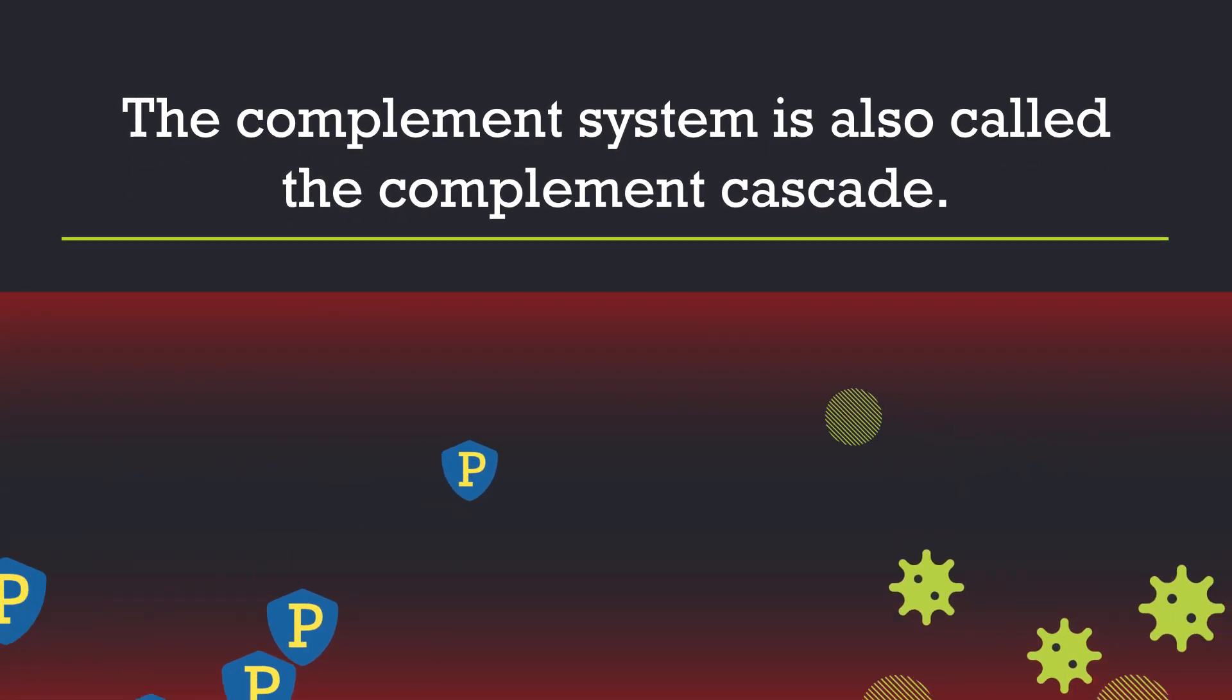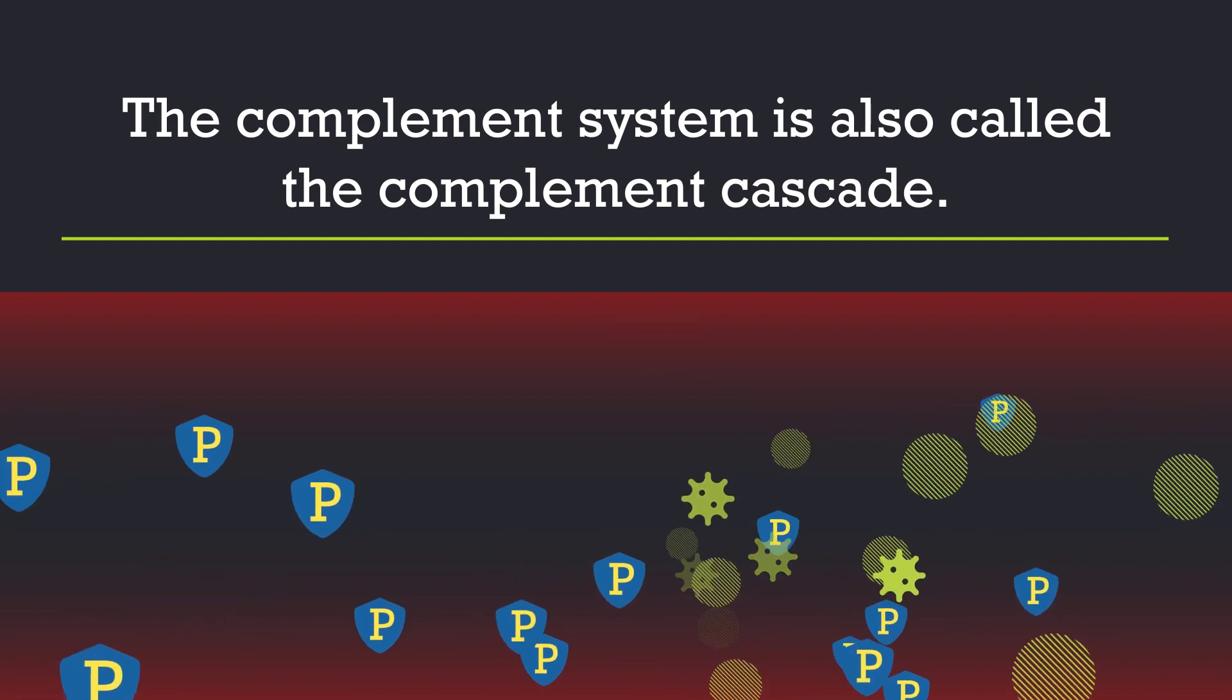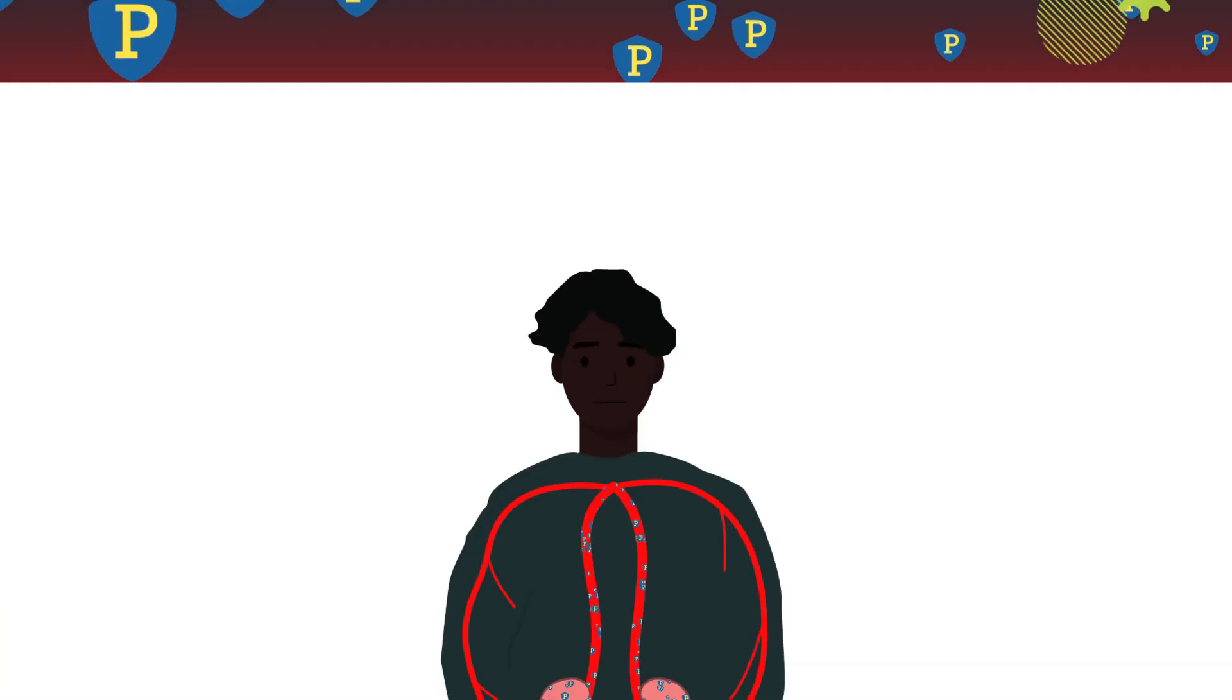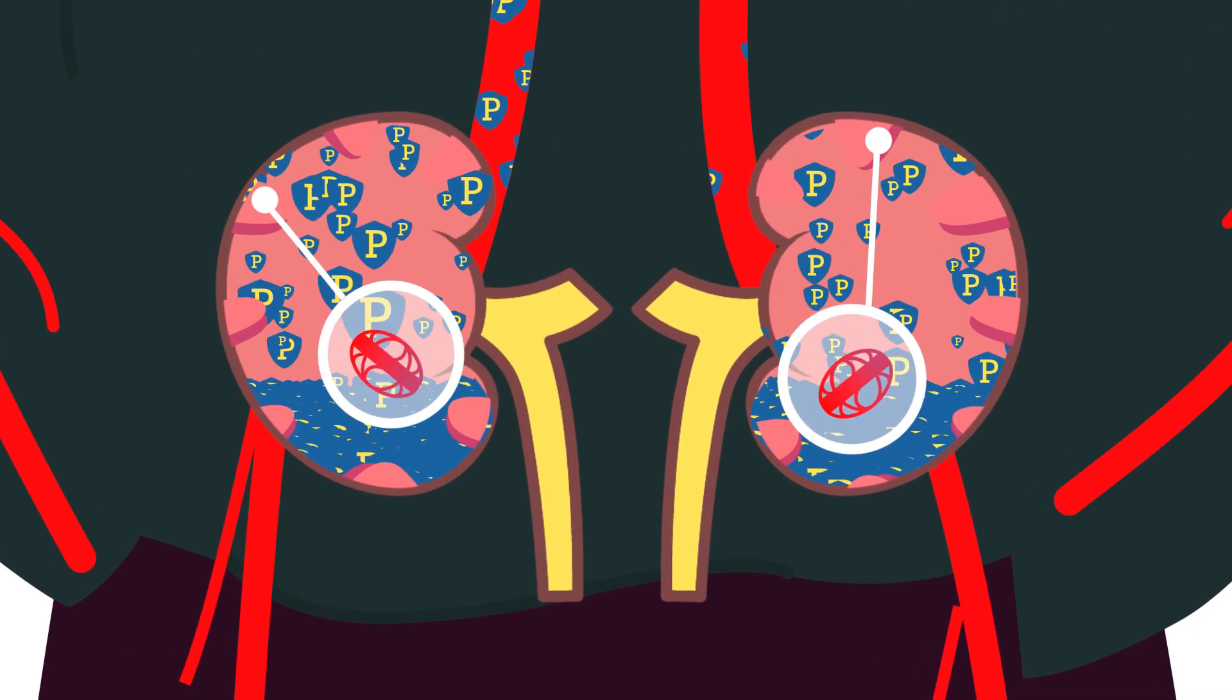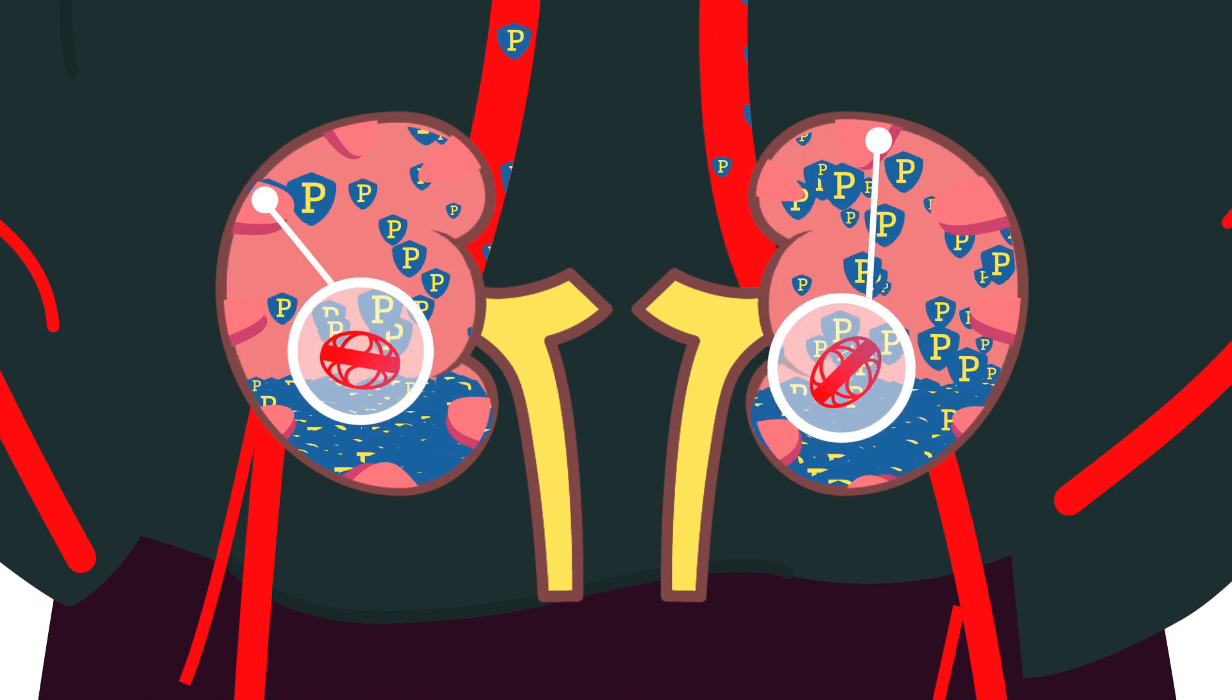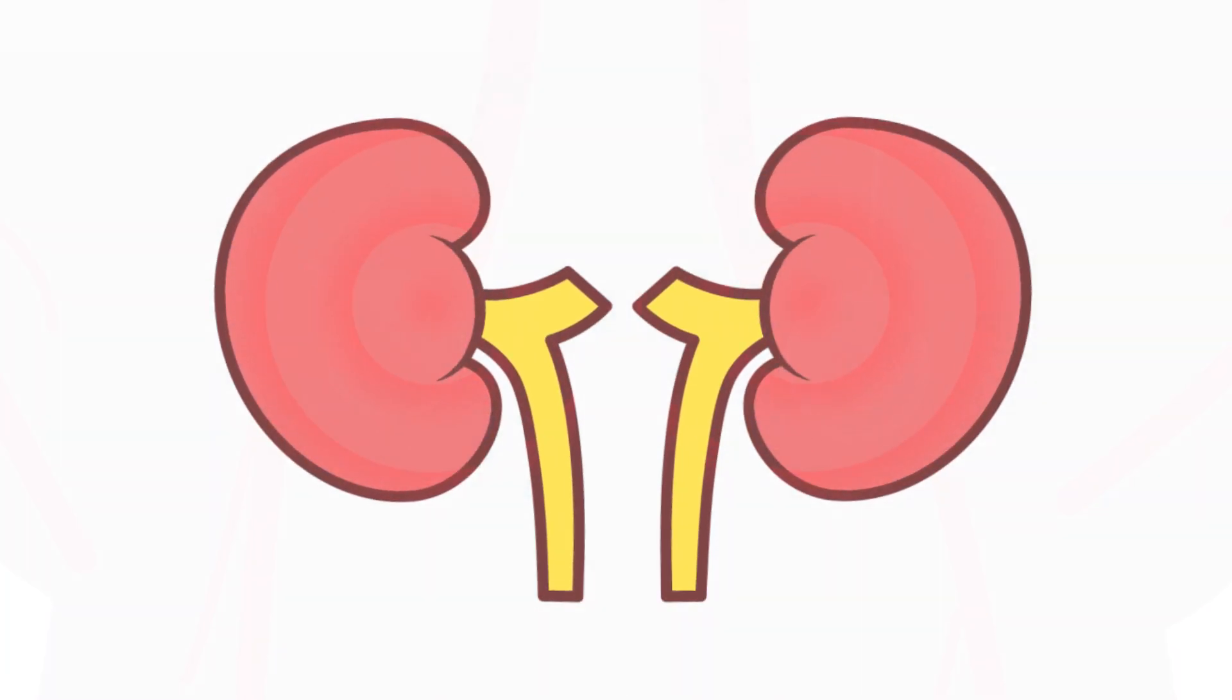It's made up of proteins in your blood that help your body fight off germs and viruses. In C3G and ICMPGN, the complement system is overactive and its proteins build up in the tiny filters in your kidneys, called glomeruli, which results in kidney damage.